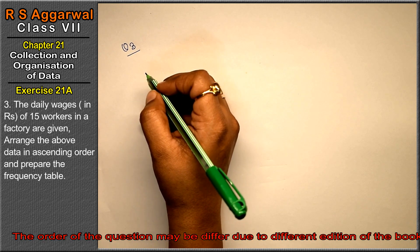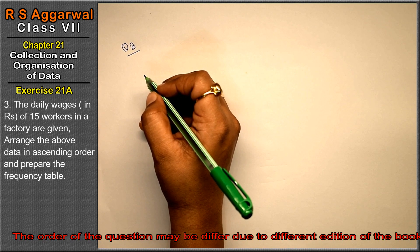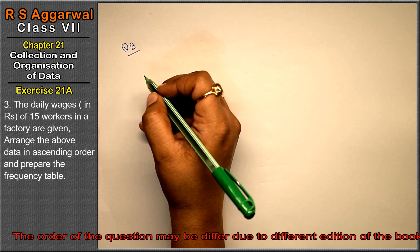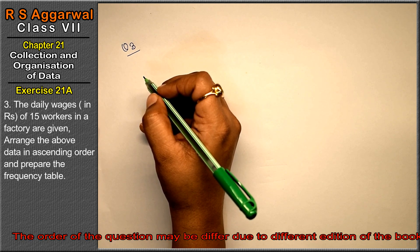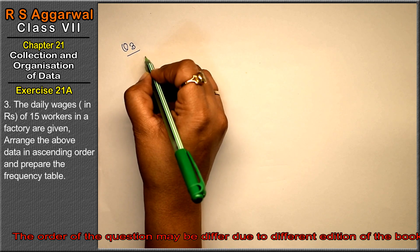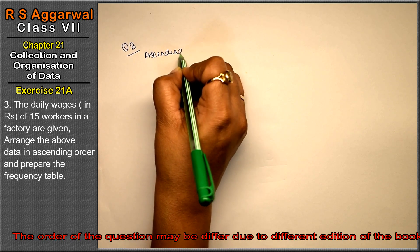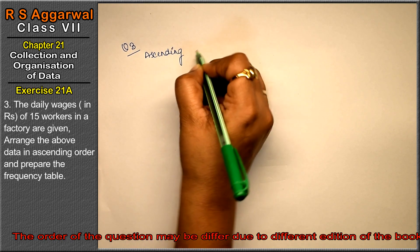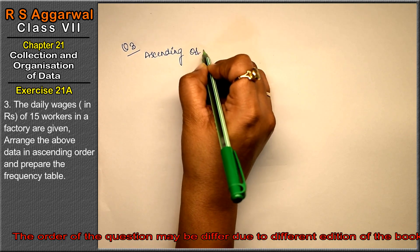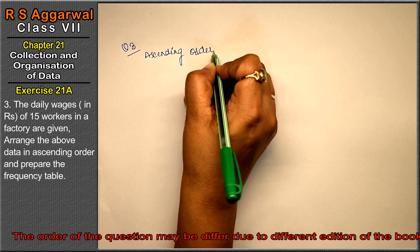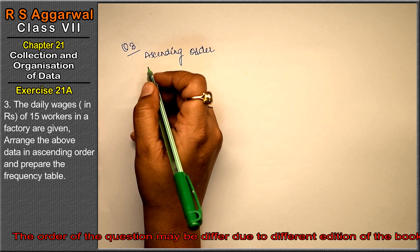Question 3 is about the daily wages of 15 workers in a factory. We need to arrange the data in ascending order and prepare the frequency table. So first let's find the smallest number — arranging in ascending order.